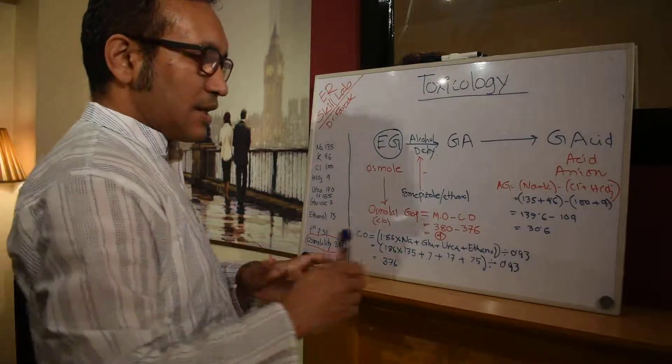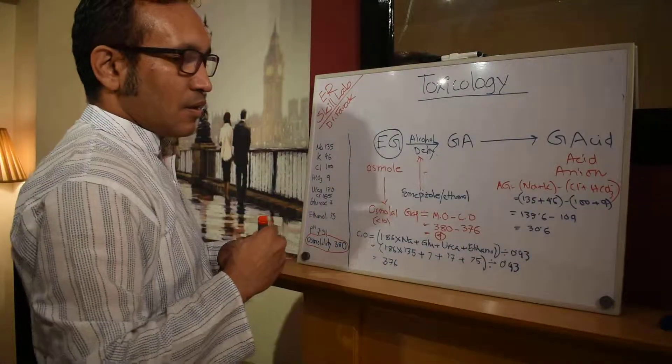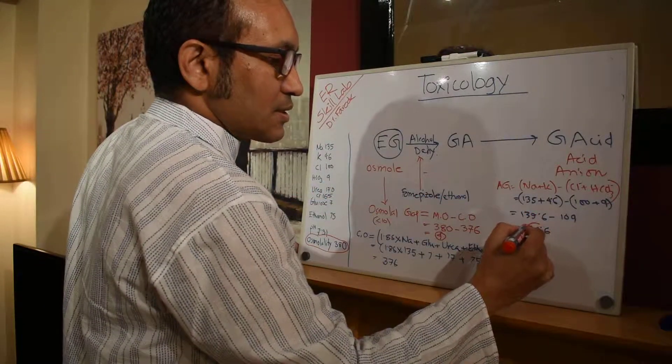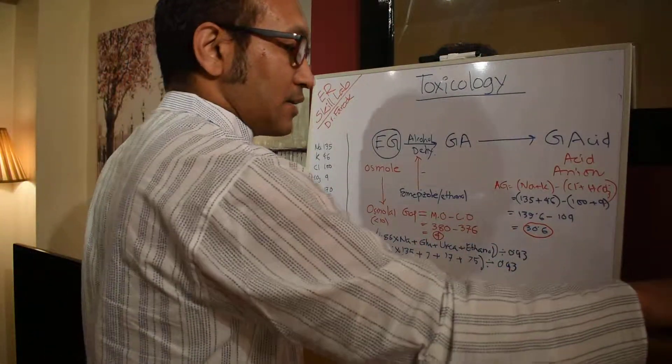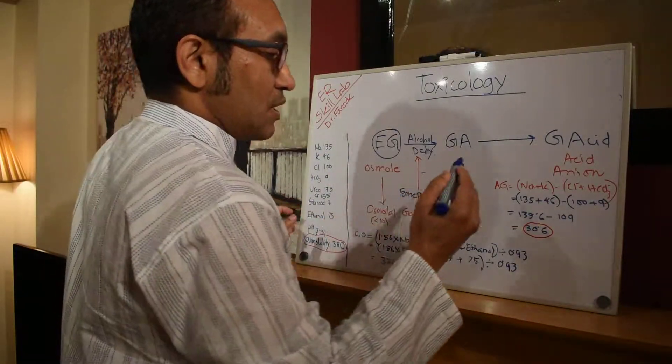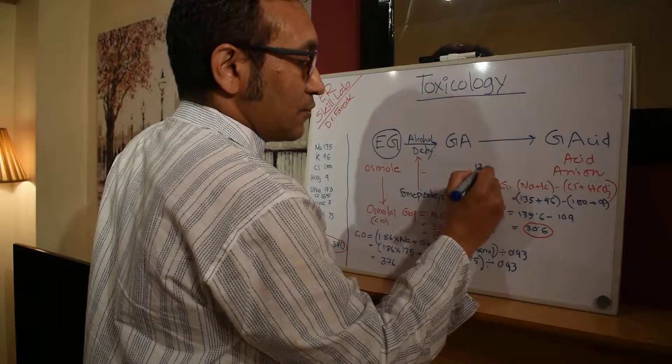So anion gap is 30.6 which is high. Normal anion gap can be from 12 to 16, so 30 is obviously too high.